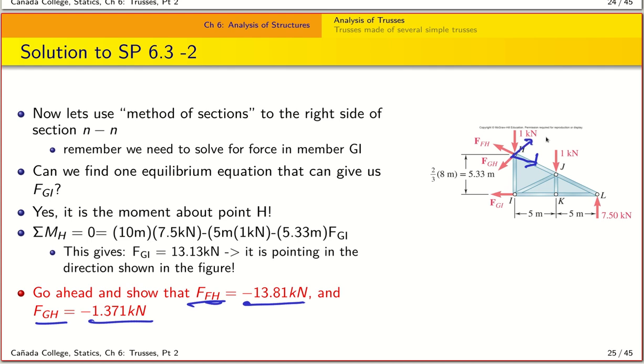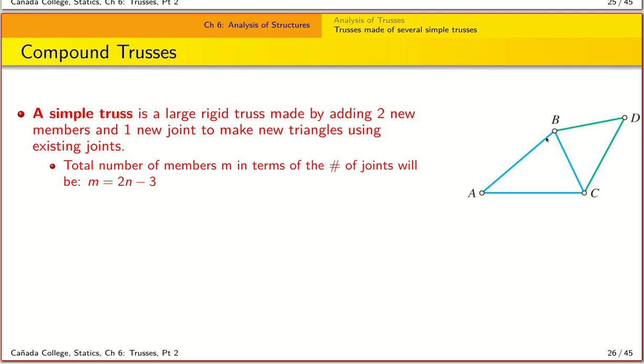Next, let's move to this idea of compound trusses. Remember, a simple truss is a large rigid truss made by combining two new members and one new joint to an existing truss. We made a new triangle from the old triangle, and that also allows us to use this expression here that relates the number of members to the number of joints.